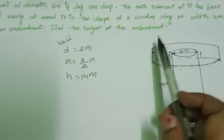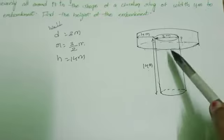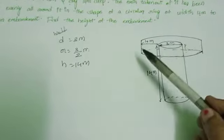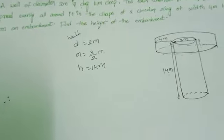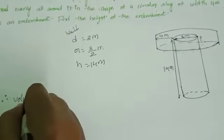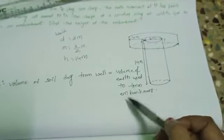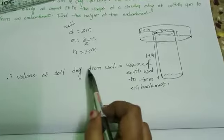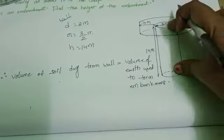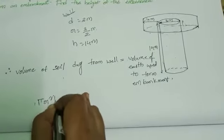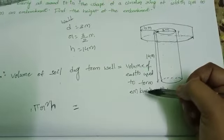We have to find the height of the embankment. We know: volume of soil dug from the well equals volume of earth used to form the embankment. Volume of soil dug from the well is the volume of the cylinder, which is π R² H. This equals the volume of earth taken to form the embankment.